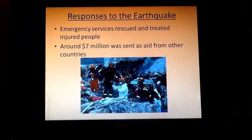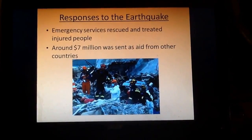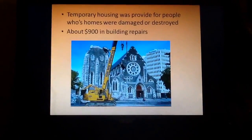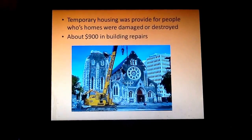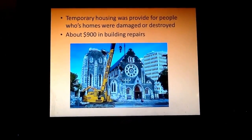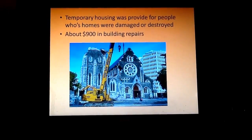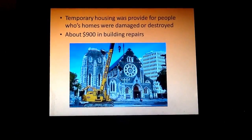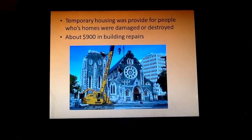About $7 million was sent in aid from other countries to help people in New Zealand. Over a longer period of time, about $900 million was spent on repairing and rebuilding houses that were destroyed. As a temporary solution, houses were provided for people whose homes were damaged, with temporary shelters set up until repairs were fully completed.